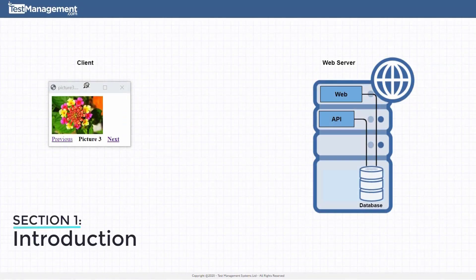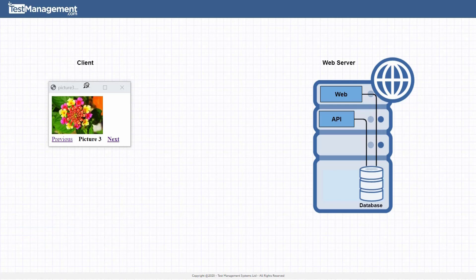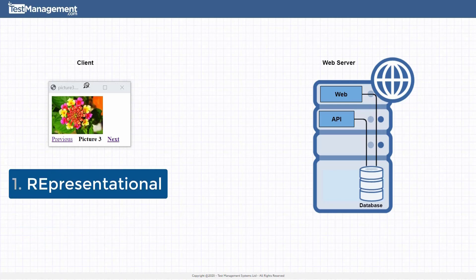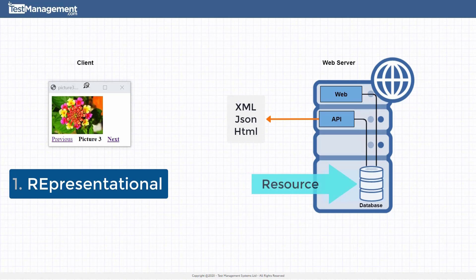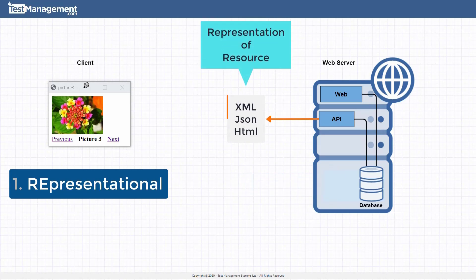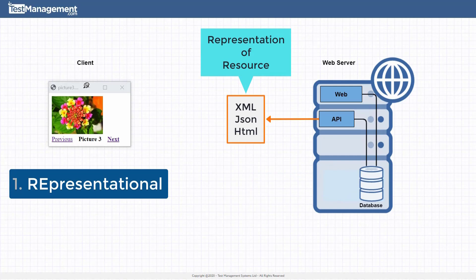By the end of this video, you'll understand what a REST API is. At its heart, you can break it down to just two core points. Firstly, representational — meaning the data or resource you want to access can be represented in different formats, for example XML, JSON, HTML, etc.